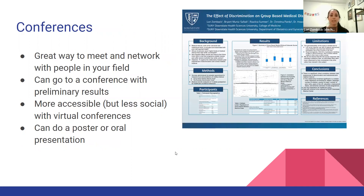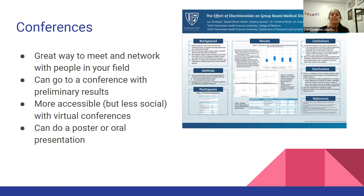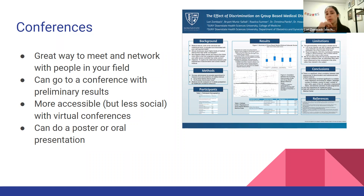Another option for communicating with the scientific community is going to conferences. This is a great way to meet and network with people in your field. You can go to a conference even with preliminary results — for conferences, you can go even with smaller sample sizes. A lot of conferences now because of COVID have been virtual, which makes them more accessible — no traveling, less of a time commitment — but it's a lot less social, so harder to make real connections. Your conference presentation can be a poster presentation — this is actually a poster I did about a year ago on a virtual conference for Emory on maternal health — or an oral presentation, which will be about 10 minutes and then a Q&A.